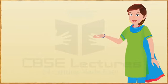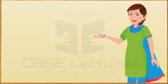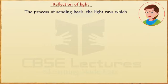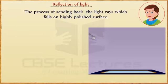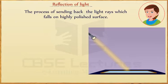Reflection of light: when light falls on the surface of an object, some of it is sent back. This process of sending back the light which falls on a highly polished surface is called reflection.